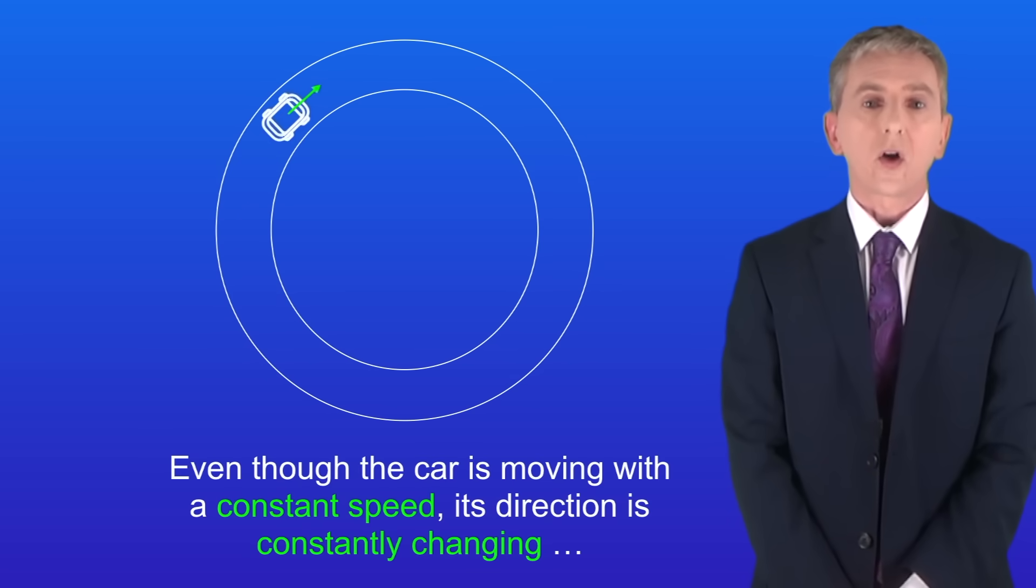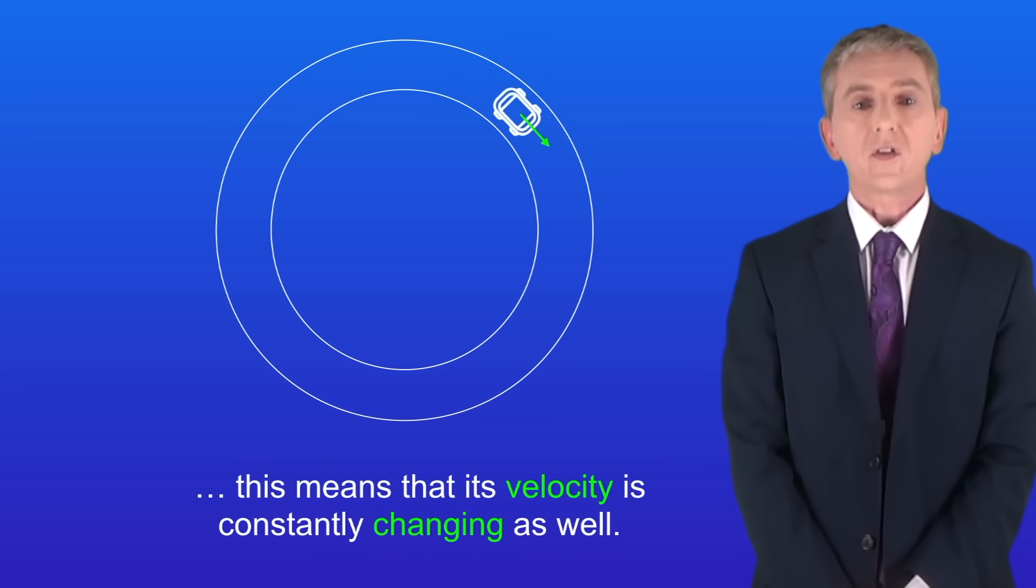As you can see even though the car is moving with a constant speed its direction is constantly changing. And this means that its velocity is constantly changing as well.